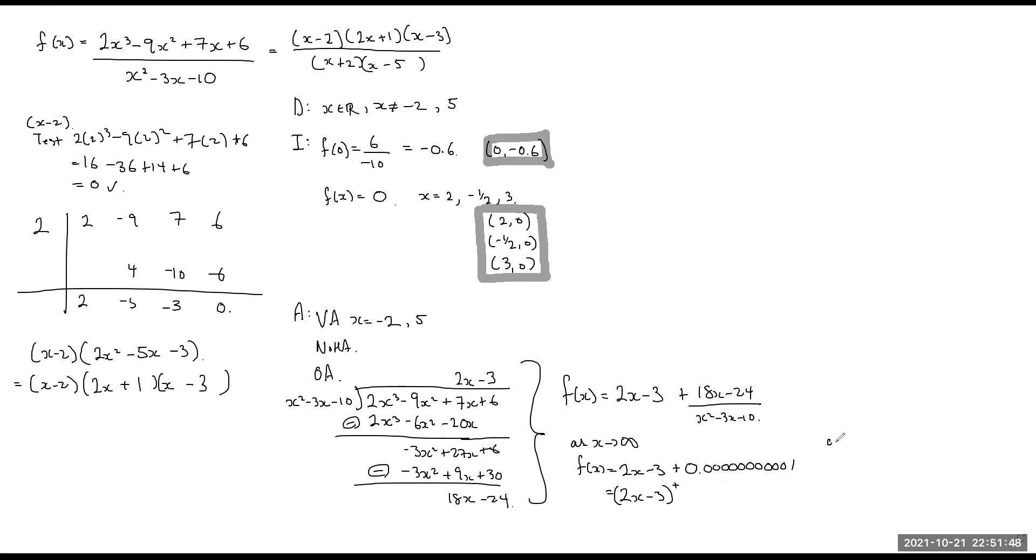At the same way, as x approaches a negative infinity, f of x would be 2x minus 3 plus a negative infinity, or a negative large number divided by a positive larger number. Now, that is so mathematically not acceptable, but I think you get the point. It is going to be subtraction of a very, very, very, very small number.